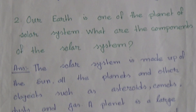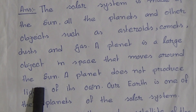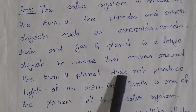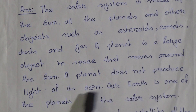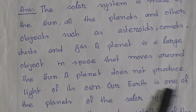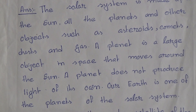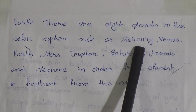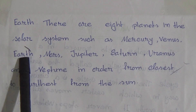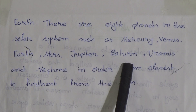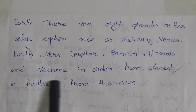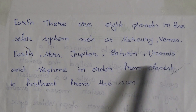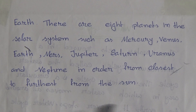A planet is a large object in space that moves around the sun. A planet does not produce light of its own. Our Earth is one of the planets of the solar system. The moon is the only satellite of the Earth. There are eight planets in the solar system: Mercury, Venus, Earth, Mars, Jupiter, Saturn, Uranus, and Neptune, in order from closest to furthest from the sun.